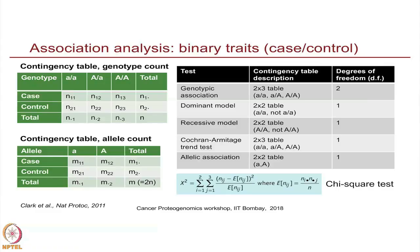Another way to deal with the additive effect is to convert the genotype count table into an allele count table. Basically, each person contributes two alleles to your count table, so your sample size increases from n to two times n. If one individual has a heterozygous locus, they contribute to both slots in the table. That way you can still do the chi-square test with degree of freedom of one, but this also assumes the additive effect.